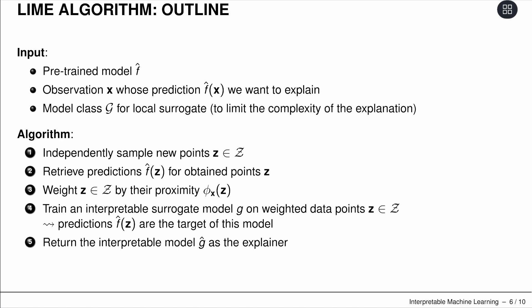We sample new points z from our space. We retrieve predictions from the original model for the obtained points. We compute the proximity—how close they are to original x—to get our weights. Then we train an interpretable surrogate model G on weighted data points.